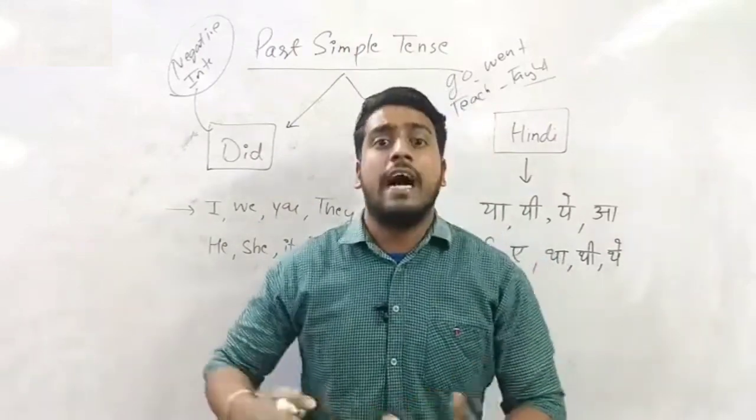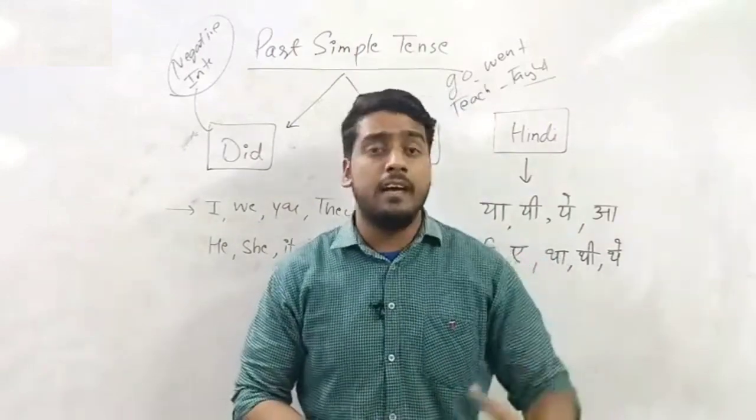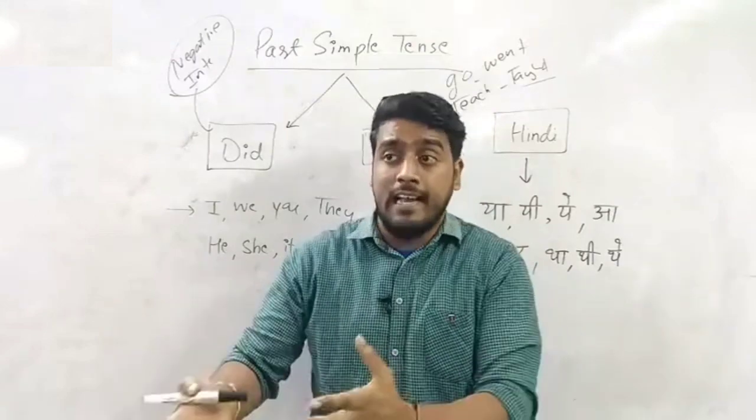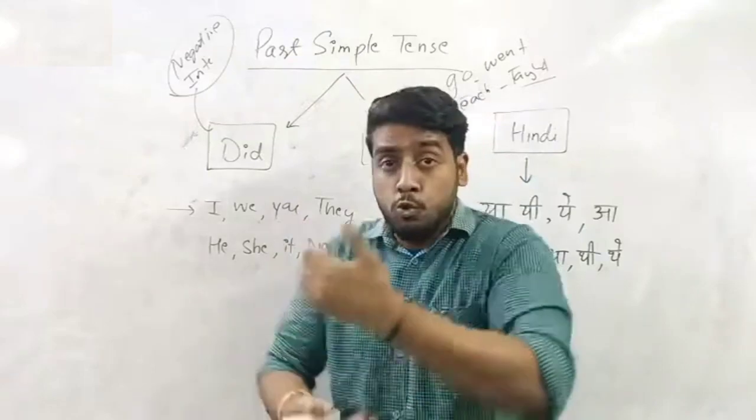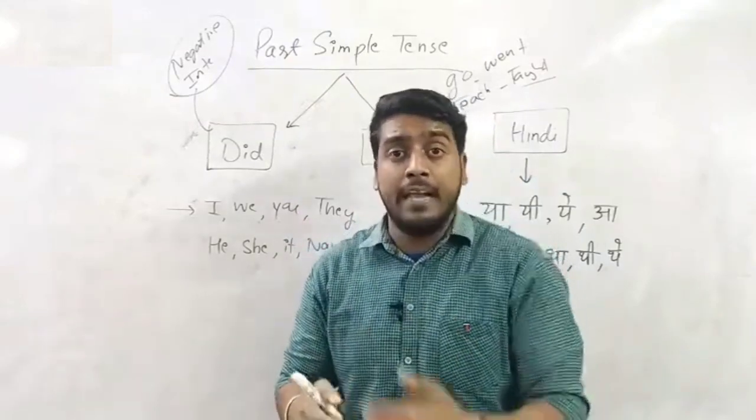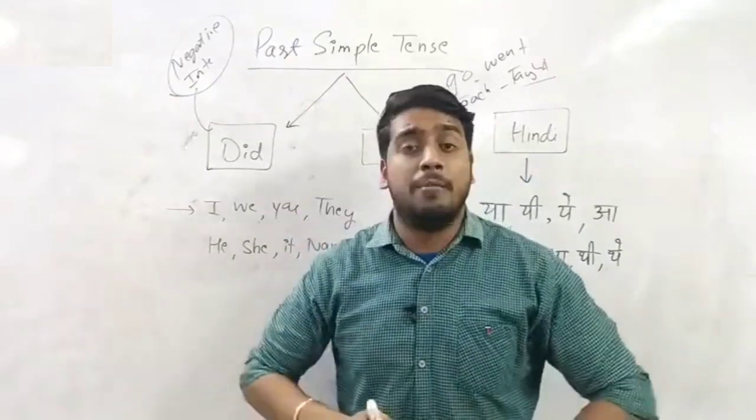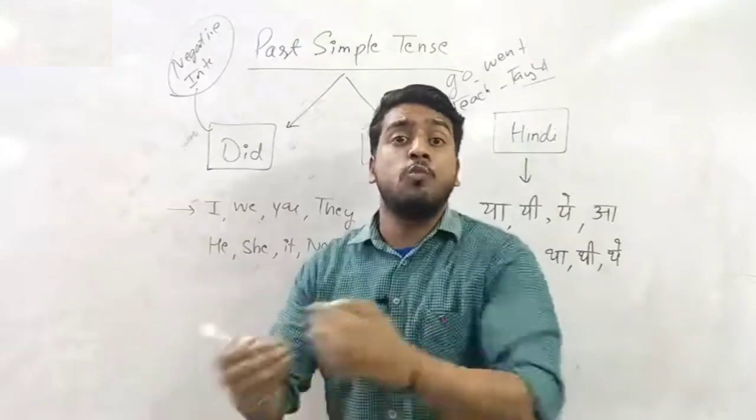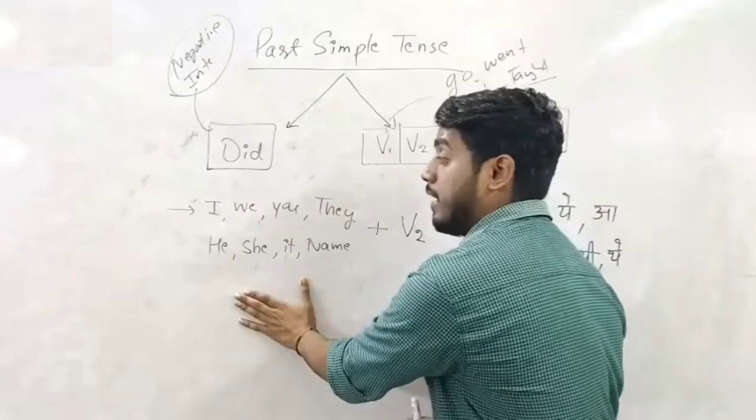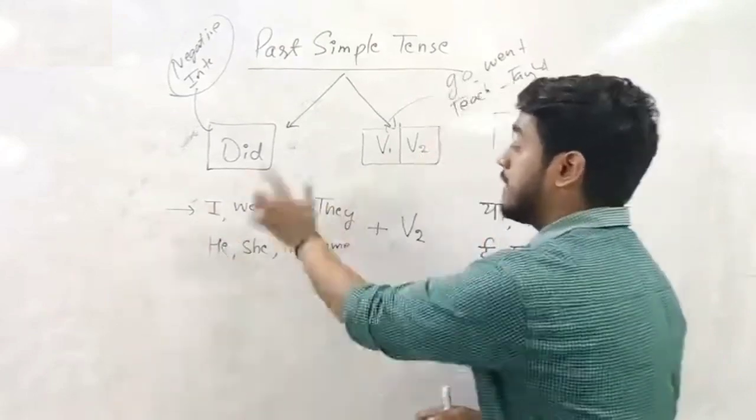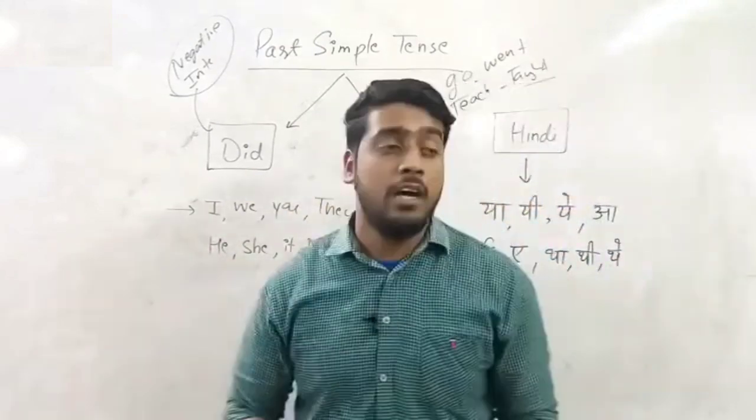Let me give you some examples. For example, मैं गया, which means I went. मैंने देखा - I saw. मैंने खेला - I played. Or we can also make आप आये - You came. आप time पर आये - You came on time. आपने मेरी class ली - You took my class. Took is the second form of take. So remember this one - to make a simple sentence, we just have to add V2 after the subject.